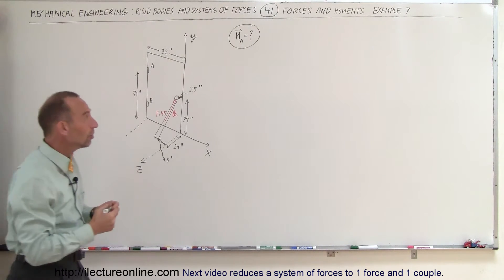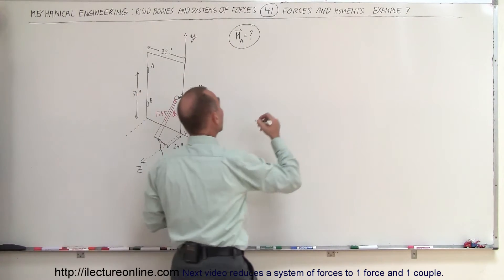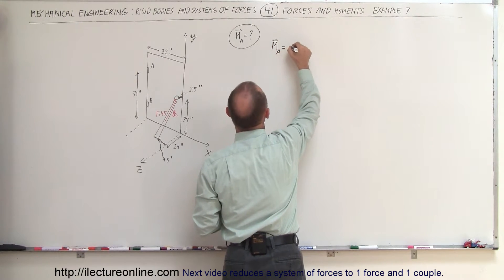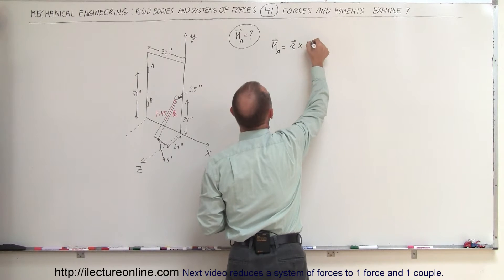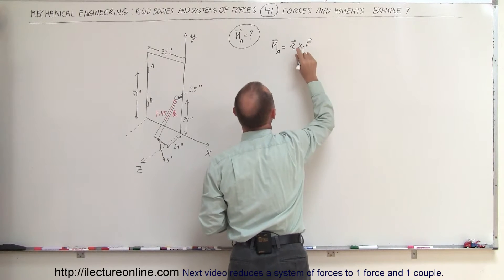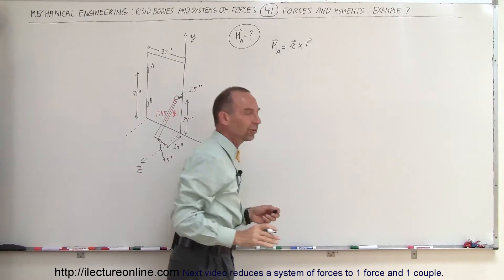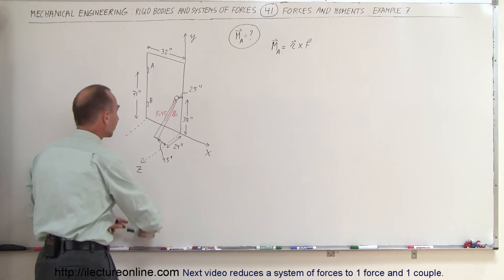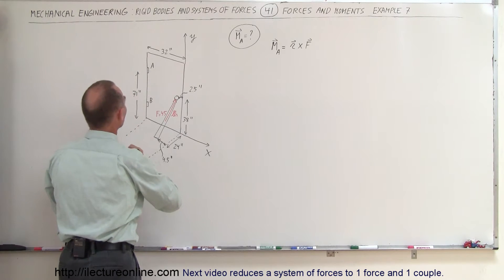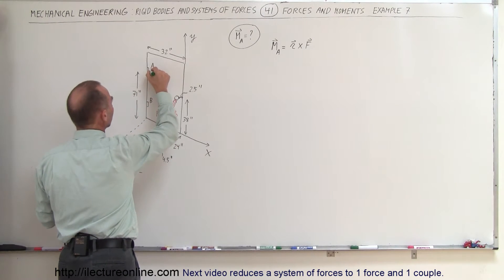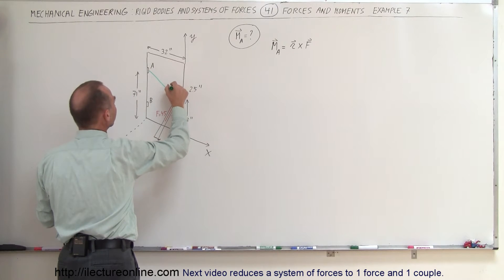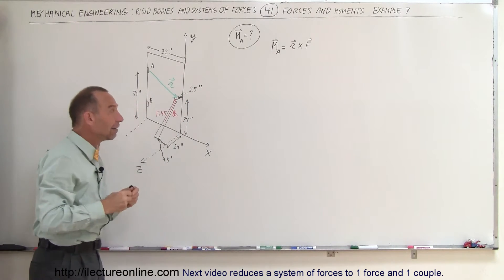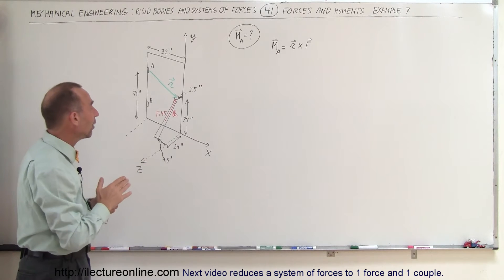So how do we calculate the moment? The equation is that the moment relative to point A is equal to R cross F — the vector (cross) product between the position vector and the force causing the moment. The position vector can be drawn from A to the door handle, so we have to find the components of R.